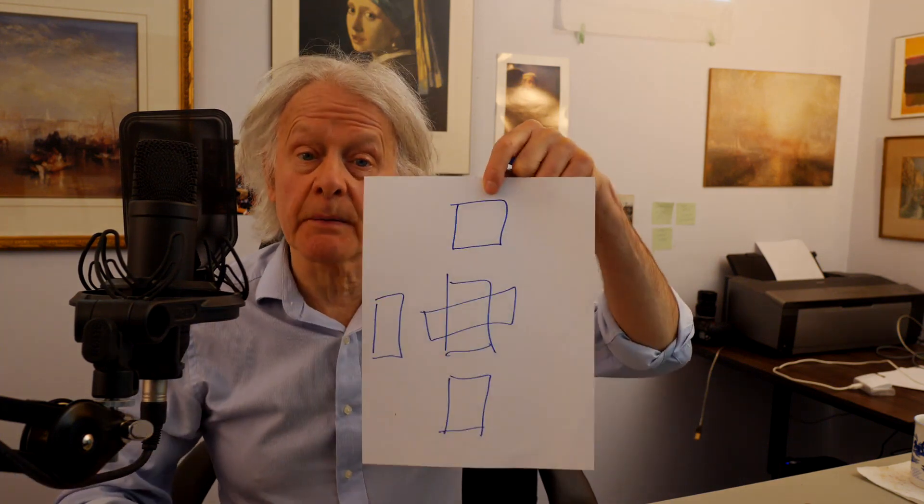Hello again, this is the tarot process part 14, the fifth card in a Celtic Cross. We've done card one, two, three goes below as the foundation, four goes to the left and represents what's passing away. The fifth card goes above the first card and represents what may come, while the sixth card goes to the right and represents what will come.